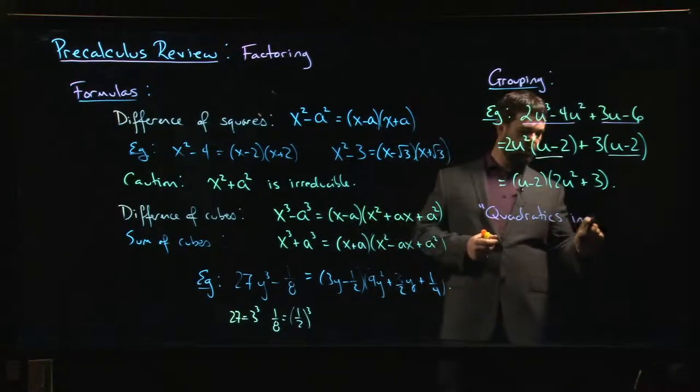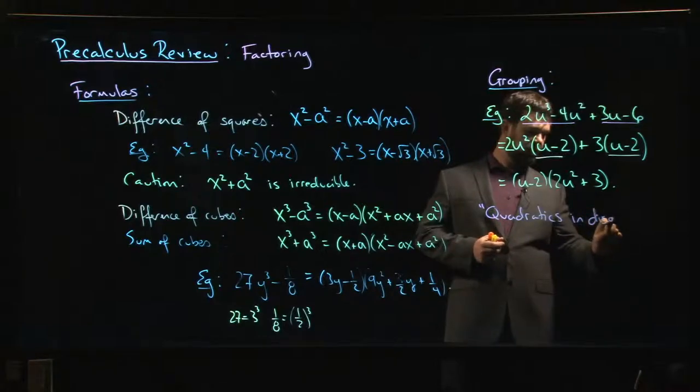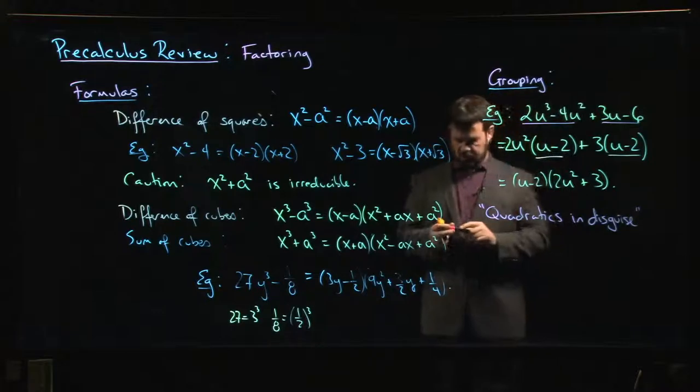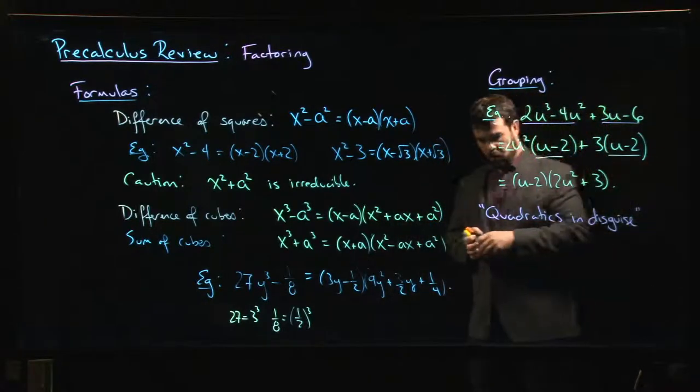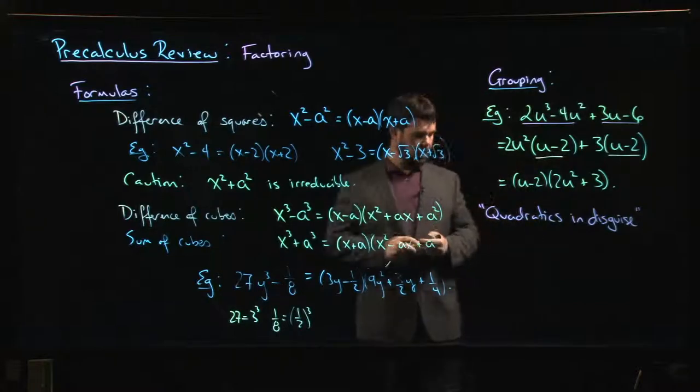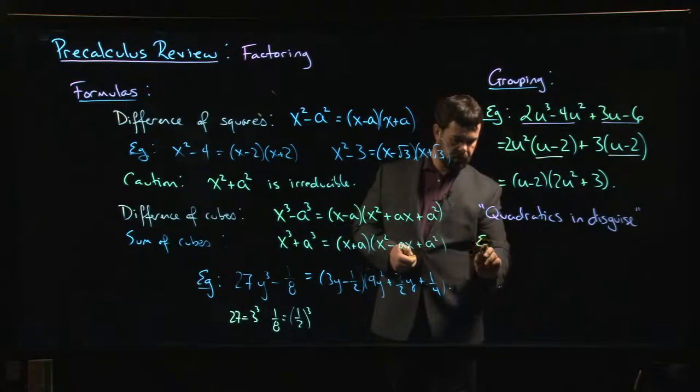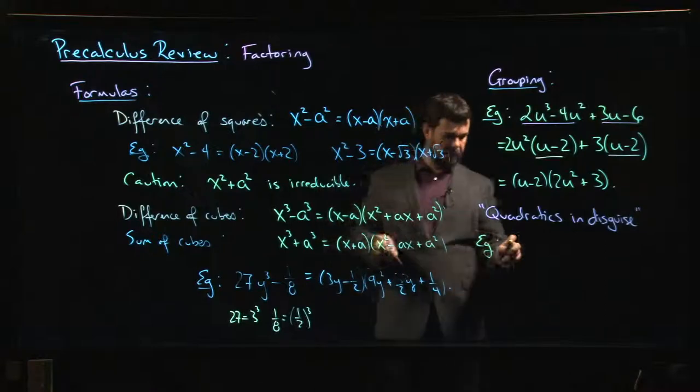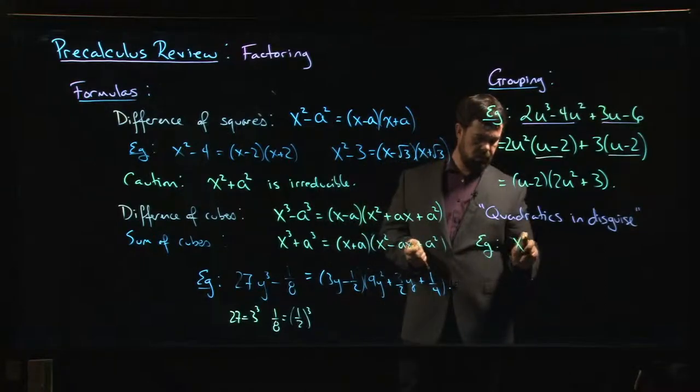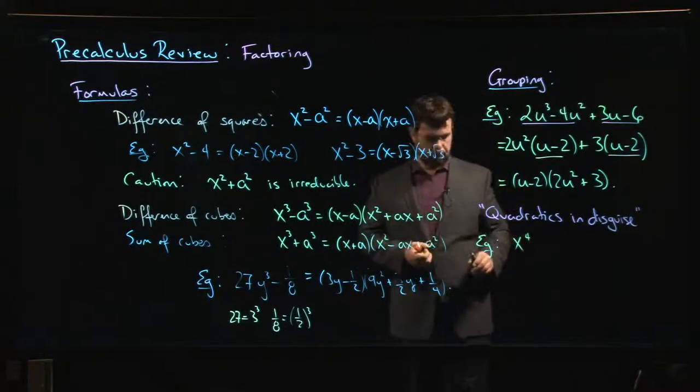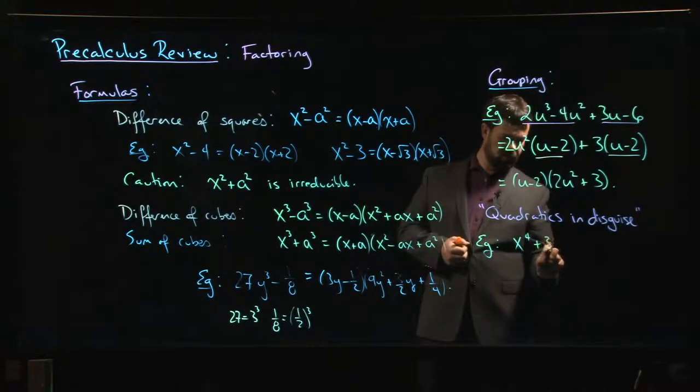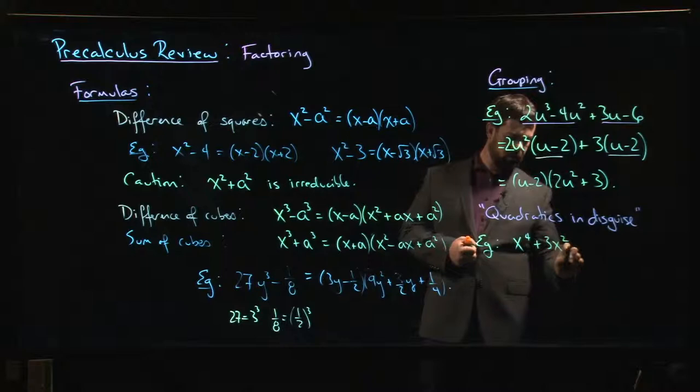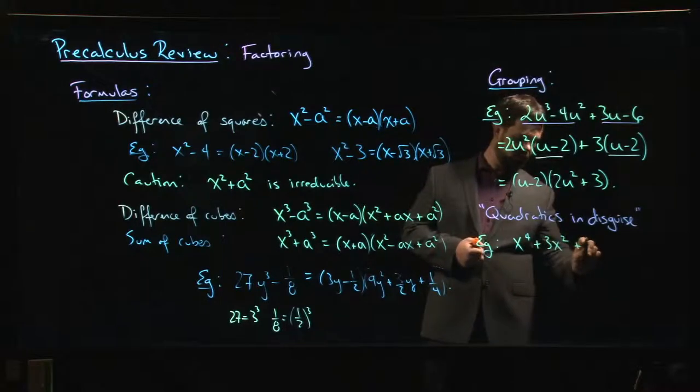You might run into what you might call a quadratic in disguise and these typically show up in degree 4 polynomials sometimes higher where you might have something like the following. You might have say x to the 4 plus 3x squared plus 2.